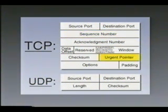TCP also prioritizes packets using urgent pointers and enables special options. UDP doesn't do any of that — it just fires packets.